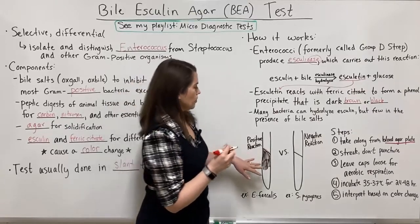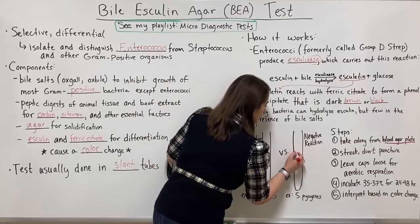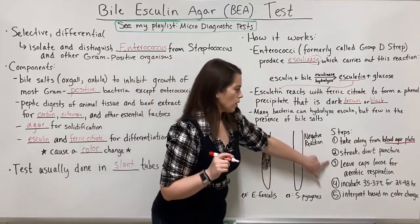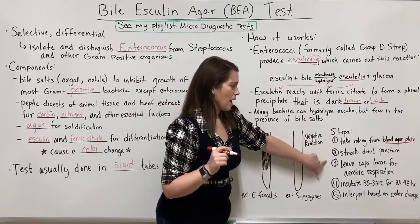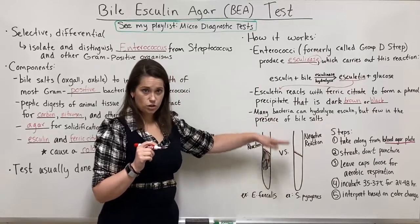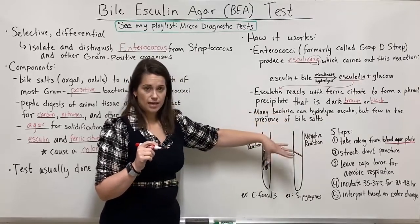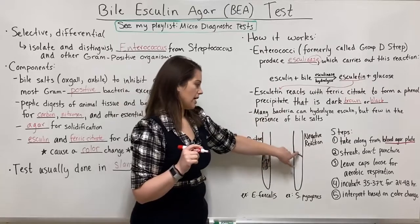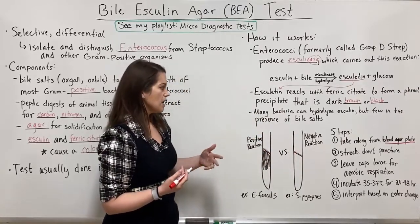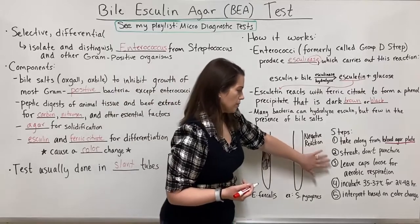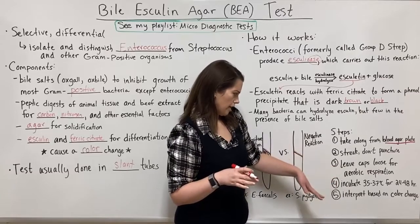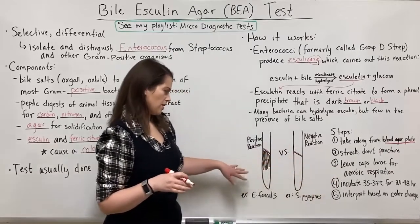Leave the caps loose — this allows oxygen to diffuse in and gives the bacteria ample oxygen for aerobic respiration. Then incubate at 35 to 37 degrees Celsius for 24 to 48 hours, and then interpret based on the color change.